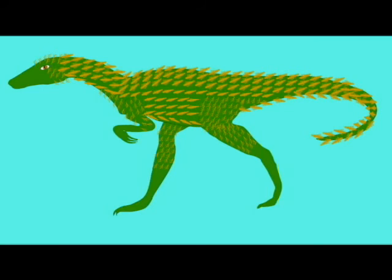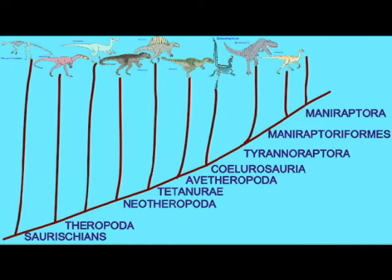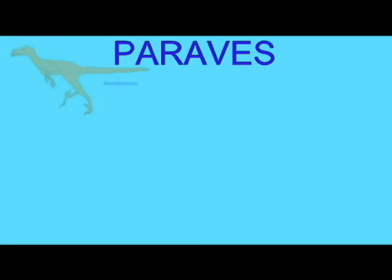The term Paravies is used for that group of dinosaurs most closely related to birds and their cousins, the birds. This would include the basal form Synornithosaurus, known to have possessed feathers, and Deinonychus, which may have hunted in groups and notably had a pubic bone which was turned backwards like the birds.